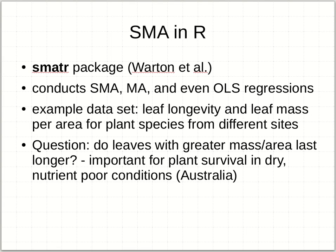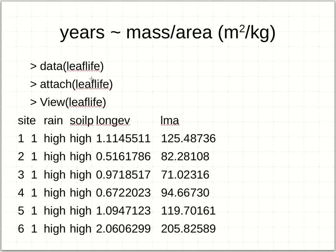I have a dataset about leaf longevity — how long a leaf stays on the tree and survives through the seasons — and leaf mass per area: how heavy a leaf might be per unit area across different plant species from a bunch of different sites. This is important for plants that might survive in dry, nutrient-poor conditions. The hypothesis is that leaves with greater mass per area can last longer. There's a lot of data from places like Australia where things can be quite dry in the outback, with aged, weathered, nutrient-poor soils. The data includes sites, rainfall level, soil phosphorus, leaf longevity, and the leaf mass-area relationship.